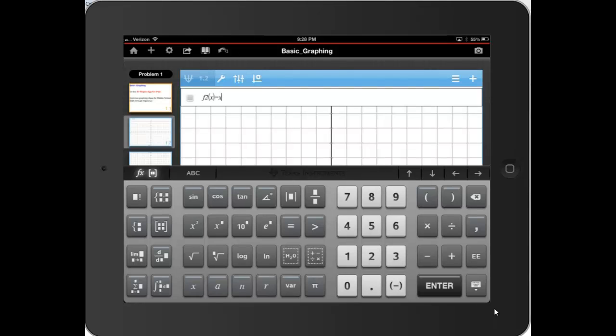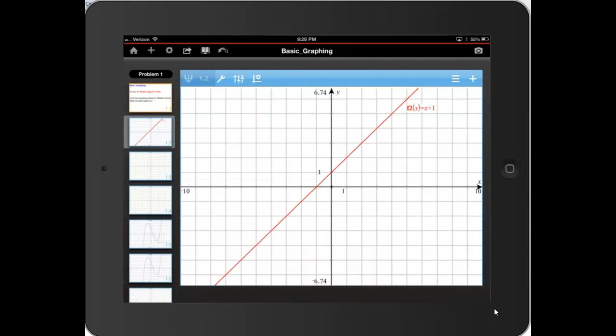Double tap to bring up the function input line. I'll type f of x equals x plus 1. Enter. And there's the graph in red. I'm going to pull the graph up and down and as I do that the graph changes and so does the equation accordingly.